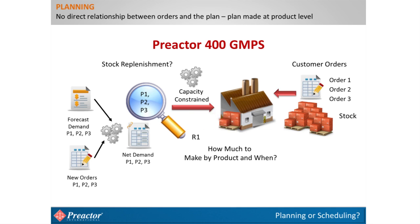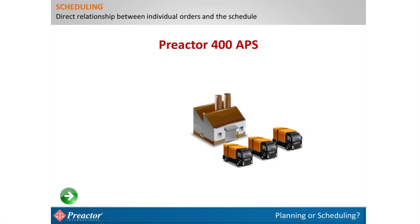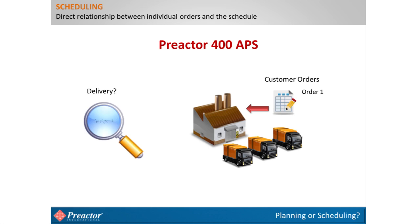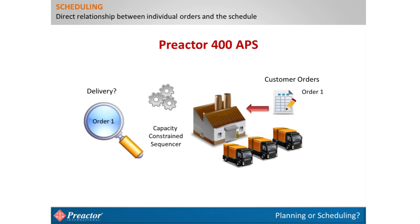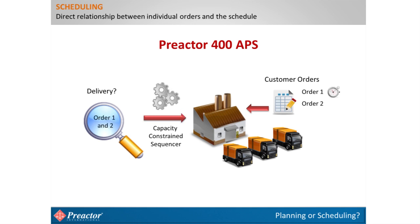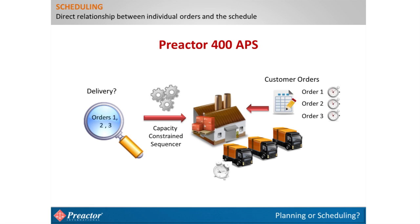In a scheduling system, there is a direct relationship between a customer order and the schedule. As each order is added, the timing of each operation step takes into account resource availability — including machines, labor, tooling, and materials. In some cases, the setup or changeover time will vary according to the attributes of the previous batch on a resource. The result is that for each order, the scheduler predicts when it will be completed, which may or may not match the order delivery due date.